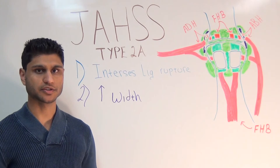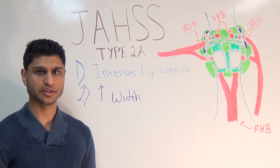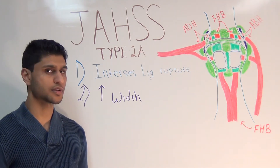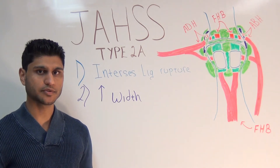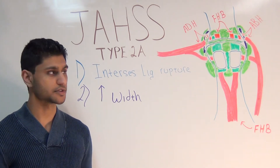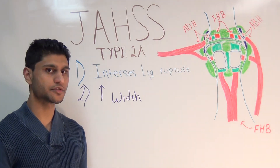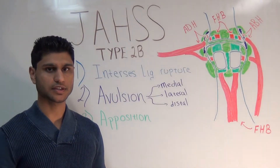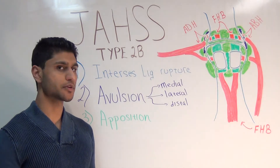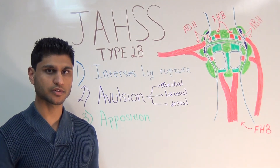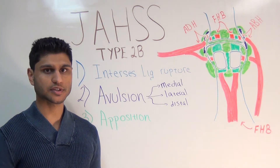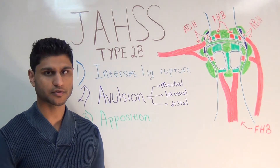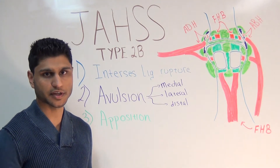Type 2 injuries are a continuation of type 1. As the hallux continues to dorsal flex, the intersesamoid ligament may be ruptured, and this gives rise to one of three potential injuries. In a type 2a, there is a complete rupture of this ligament. On X-ray, you will see that there will be an increased space or width between the sesamoids. In a type 2b, rupture of the intersesamoid ligament causes an avulsion fracture of the tibial or fibular sesamoid, although the tibial sesamoid is more commonly injured. The fractured fragment can shift medial, lateral, distal, dorsal, plantar — really in any direction.